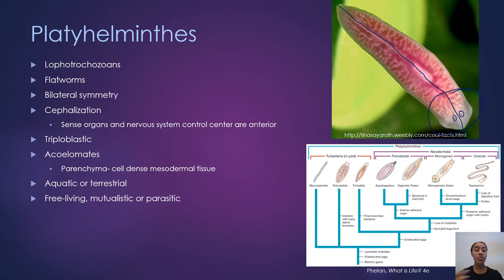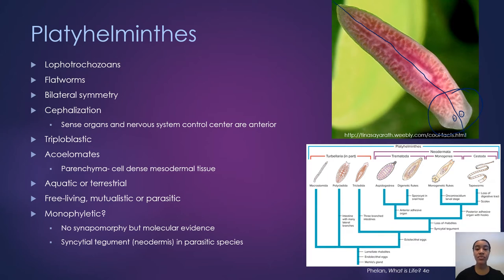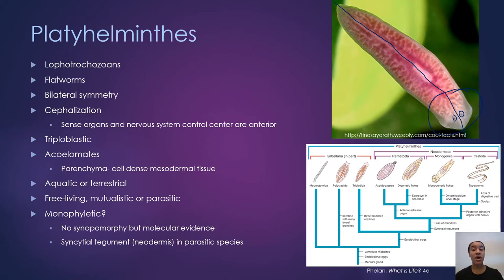Platyhelminthes can be aquatic or terrestrial. They can be free-living, have mutualistic relationships with other organisms, or be parasitic — and a decent portion of the parasitic ones are major concerns to humans. There is a lot of debate as to whether Platyhelminthes is a monophyletic clade, due to the fact that there are no synapomorphies between all of the flatworms. We do see some molecular evidence suggesting they're related and stem from a common ancestor, but there are many questions about whether this clade is truly monophyletic.